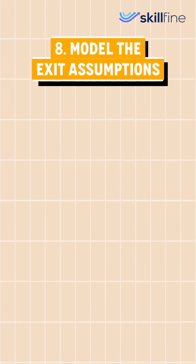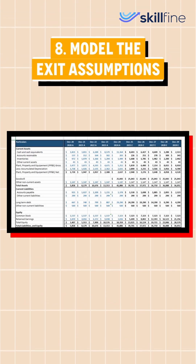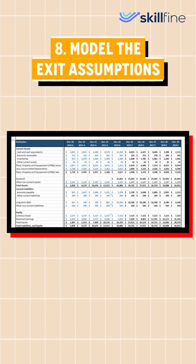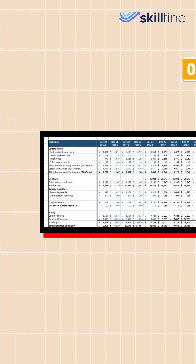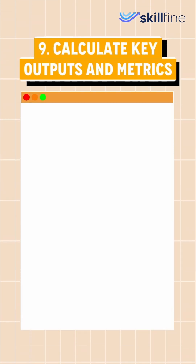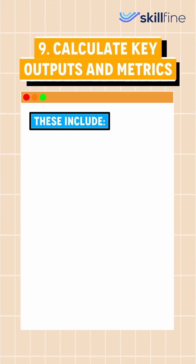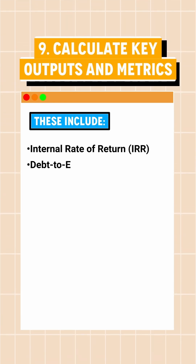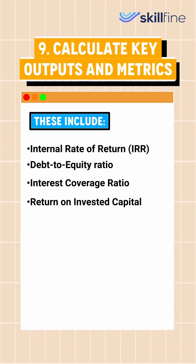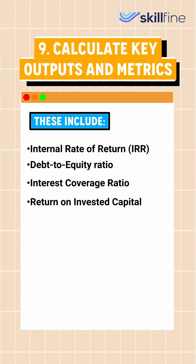The eighth step is to model the exit assumptions, focusing on calculating the implied valuation of the company at the time of exit. In the ninth step, we calculate key outputs and metrics like IRR and key financial ratios. These metrics play a crucial role in assessing the investment's performance and offering insights.